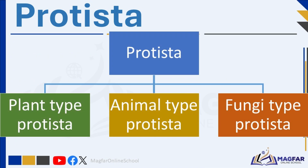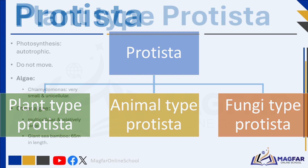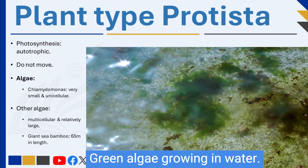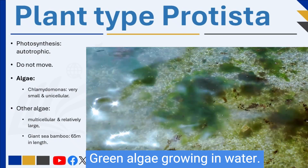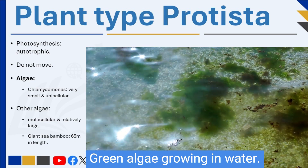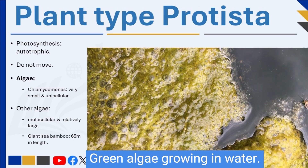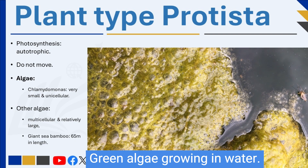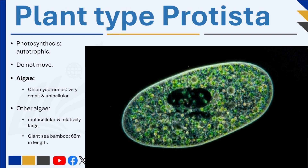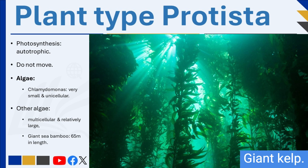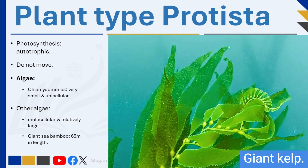Protista are divided into three groups: plant-type protista, animal-type protista, and fungus-type protista. Plant-type protista have chlorophyll and produce their own food through photosynthesis — they are autotrophic. They have no specialized way of moving and are sometimes referred to as algae. Some algae, such as Chlamydomonas, are microscopically small and unicellular, approximately one millionth of a meter in diameter. Other forms of algae are multicellular and relatively large, such as giant sea bamboo that can grow to a length of 65 meters.